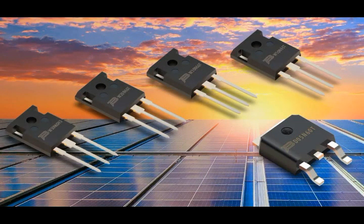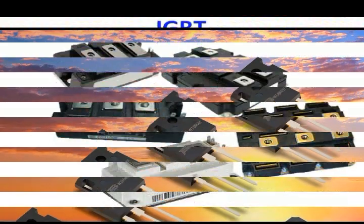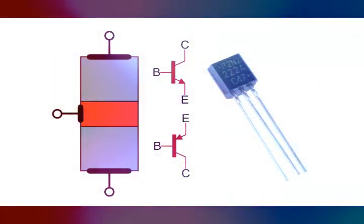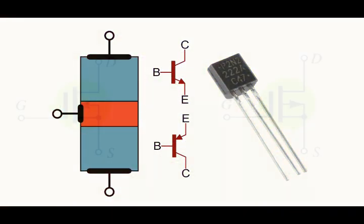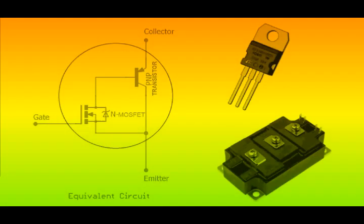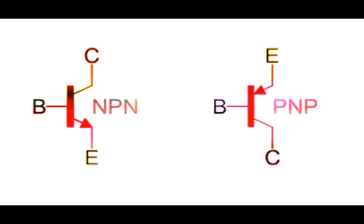Insulated gate bipolar transistor, or IGBT for short, is a semiconductor device that has a function between a bipolar junction transistor BJT and a field effect transistor MOSFET. The IGBT transistor has the best parts of the two common BJT and MOSFET transistors in its structure.